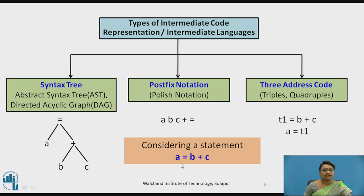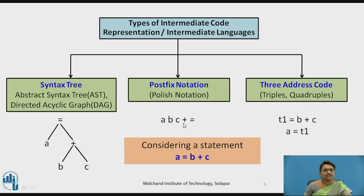Here is a simple example: the statement a = b + c. This statement is converted as a tree where b + c is first evaluated, the temporary result is stored, and then assigned to a. The same statement in postfix notation shows b and c evaluated with plus first, then assigned to a. In three-address code, t1 = b + c is one operation, and then a = t1. These three forms — syntax tree, postfix notation, and three-address code — represent the intermediate representation.